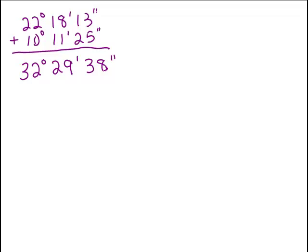And what you want to make sure of is that your seconds and minutes are not more than 59, because if you had 60 seconds, that's the same as one minute. Or if you had 60 minutes, you could simply write it in terms of one degree.